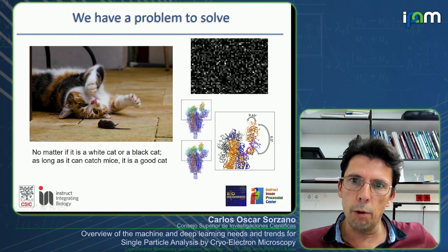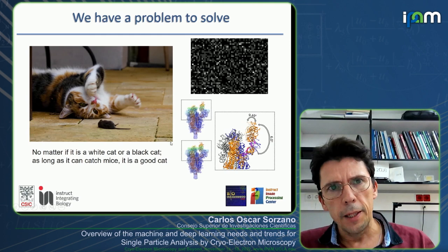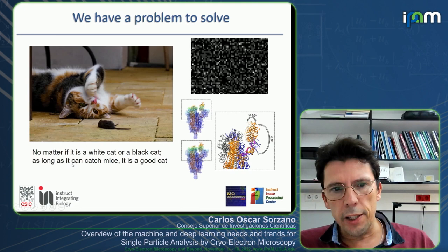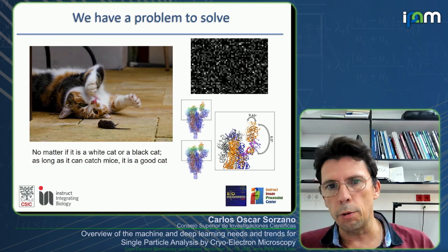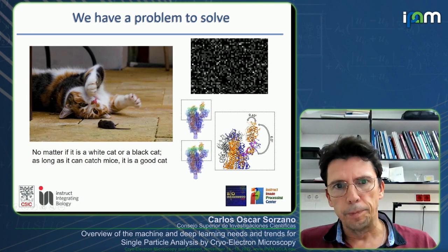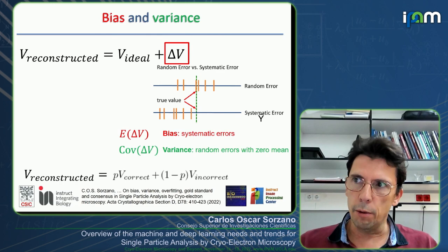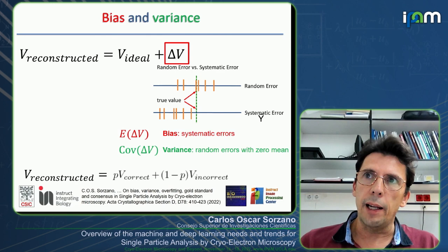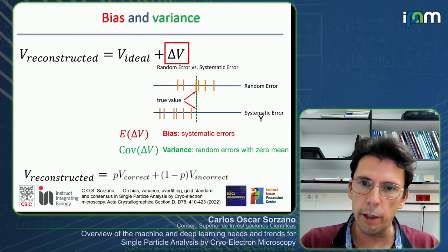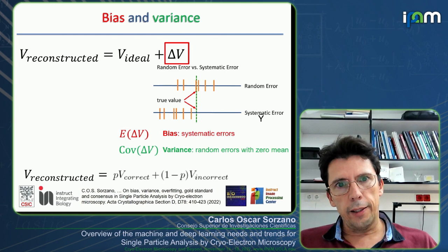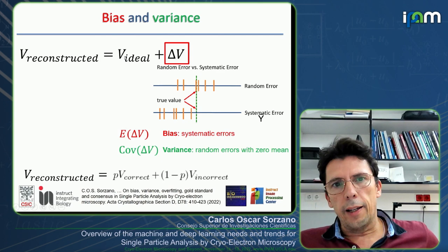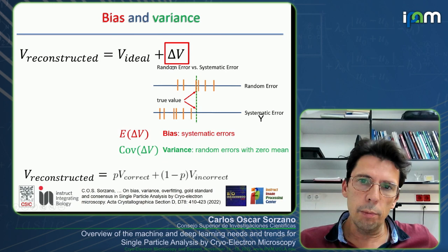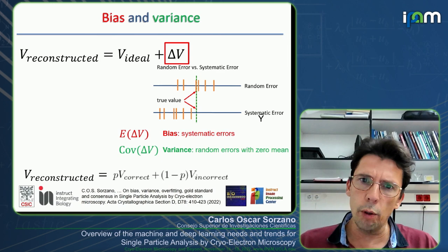I like to think of it this way: we have a problem to solve — from raw data frames to the 3D structures we are interested in. I don't care if a cat is white or black, as long as it can catch mice it is a good cat. I don't care if you use classical image processing or deep learning, as long as we can solve these structures. In either setup you will have to estimate parameters, and what you actually get is the ideal reconstruction plus some perturbation from errors made along the pipeline.